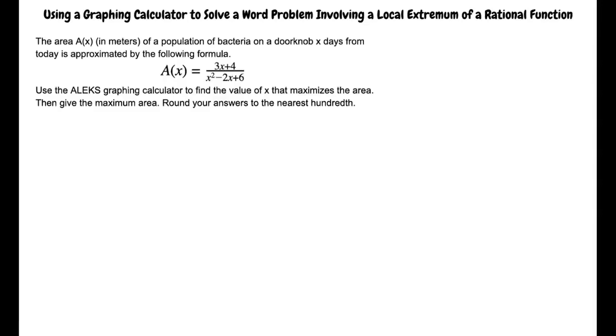The area A(x) of a population of bacteria on a doorknob x days from today is approximated by the following formula. Use the ALEX graphing calculator to find the value of x that maximizes the area. Then give the maximum area. Round your answers to the nearest hundredth.